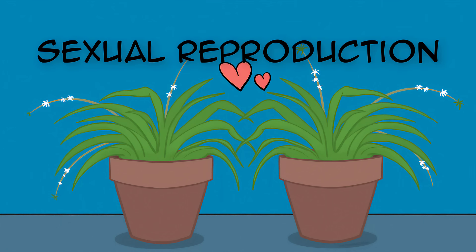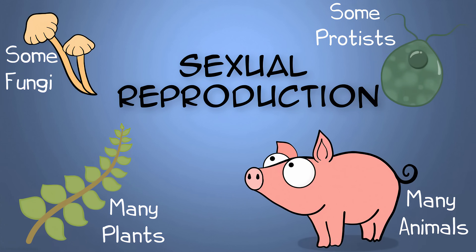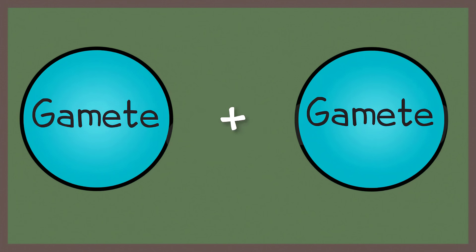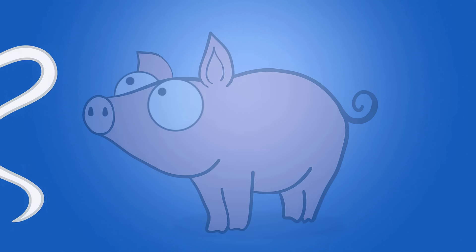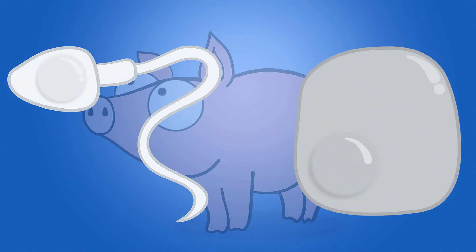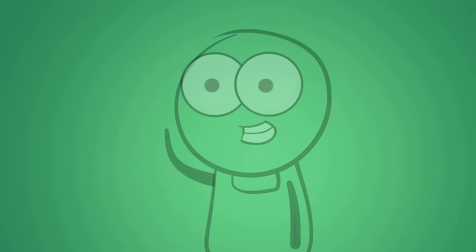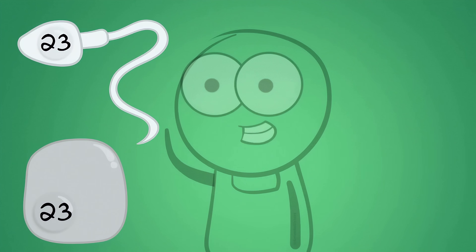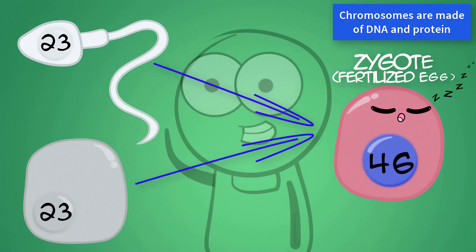In fact, lots of organisms can — some fungi and some protists, many plants, many animals. Sexual reproduction involves the uniting of gametes, which are reproductive cells, to make a new organism. If you're talking about animals, typically these gametes would be known as a sperm cell from the male organism and an egg cell from the female organism. Gametes typically have half the number of chromosomes of a somatic cell. So in humans, sperm and egg cells each have 23 chromosomes. When they combine, they can produce a new cell — a fertilized egg known as a zygote — which would then have 46 chromosomes.